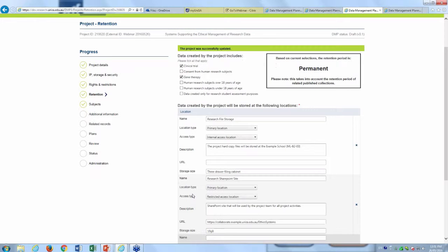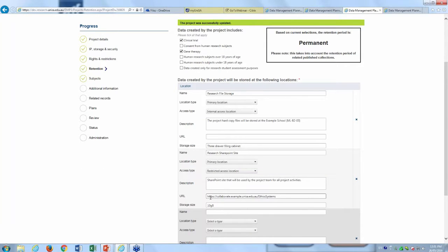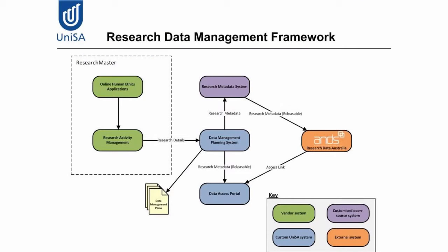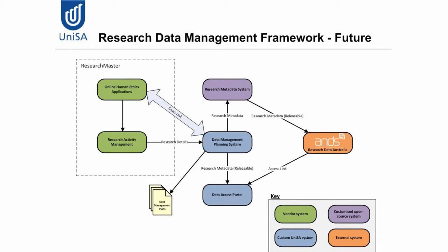The system also records where project data is stored — for example, a physical location such as a filing cabinet in a specific building and room, or a digital URL such as a SharePoint site. Looking ahead, UniSA intends to create a cross-link between their online ethics system and data management planning system so that information from a data management plan can populate the human ethics application, and vice versa, to avoid double data entry. They have held off on this due to changes at NHMRC with the human research ethics application form.